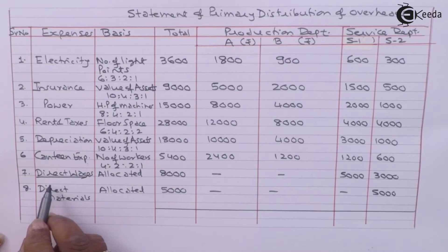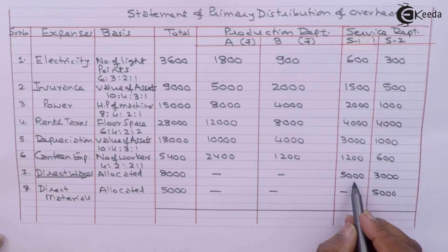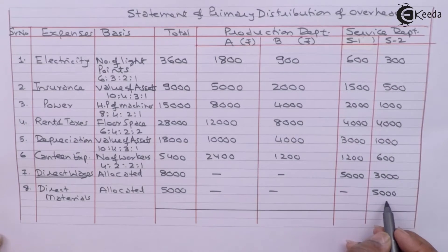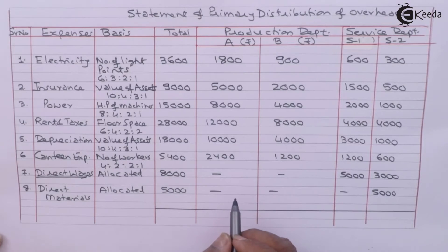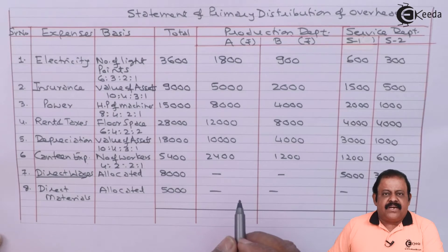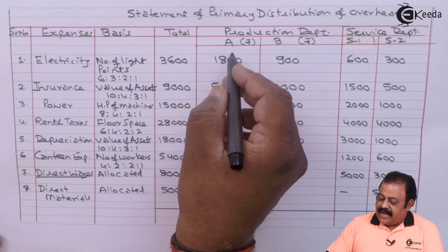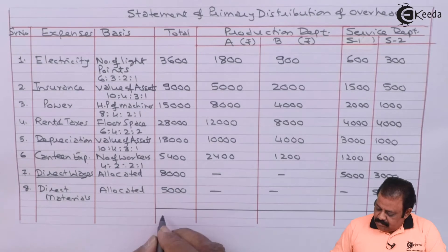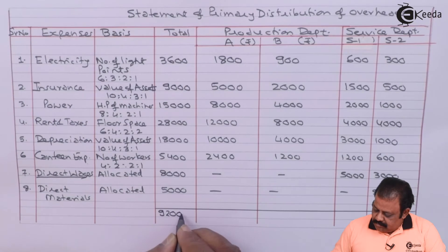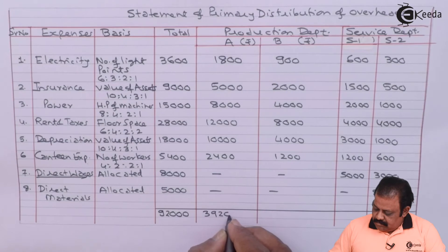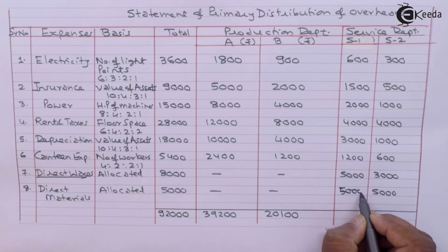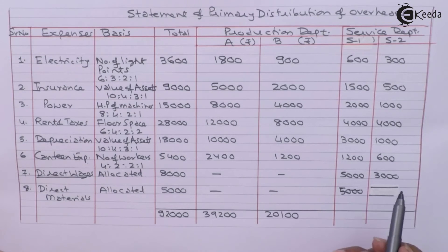Direct wages, even though spent for service departments, will be considered as overheads. Direct material for Service Department S1 of 5,000 will be considered as overheads. Whereas in the case of production departments, actual amounts of direct material and direct wages paid will not be treated as overheads. We can now add up all the values to get the share of overheads of each respective department. Direct materials are spent in the case of Service Department S1 and not in Service Department S2.